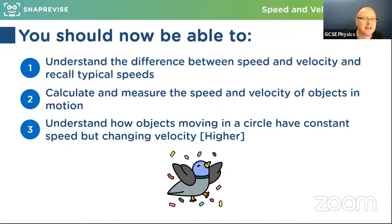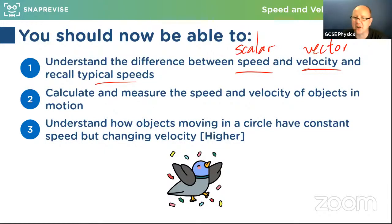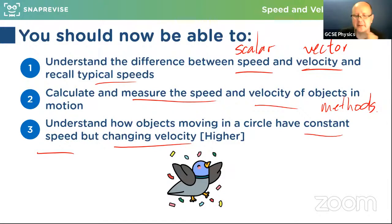Summary of what we've covered: the difference between speed (scalar — magnitude only) and velocity (vector — magnitude and direction); typical speeds for walking (1.5 m/s), running (3 m/s), cycling (6 m/s), car (30 m/s), train (60 m/s), aircraft (200 m/s); calculations and measurement methods including light gates and ticker tape; and for higher level, how objects moving in a circle can have constant speed but changing velocity — because direction is constantly changing, meaning they are accelerating.